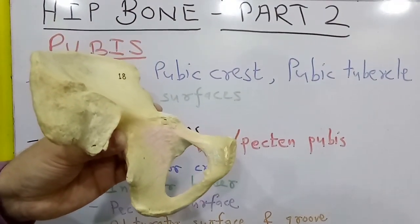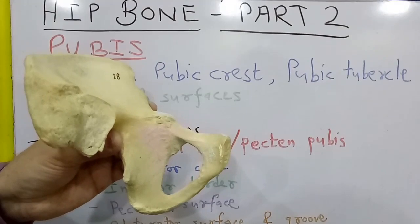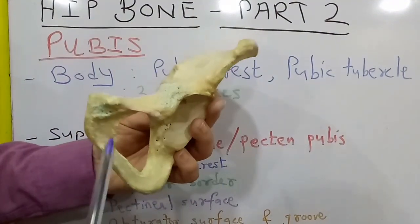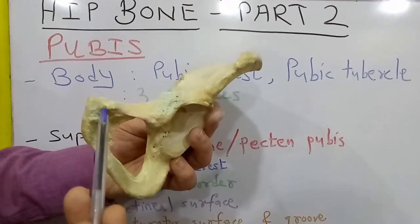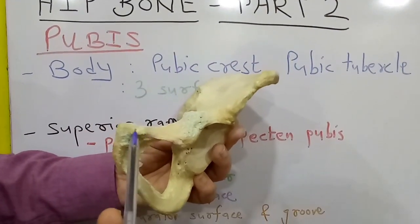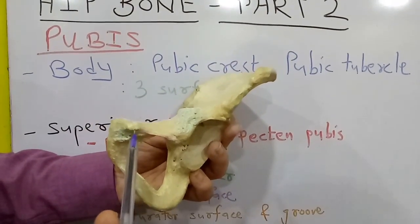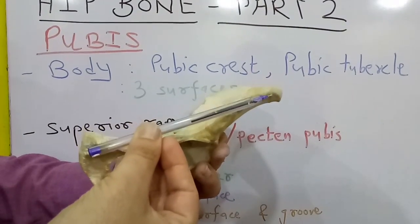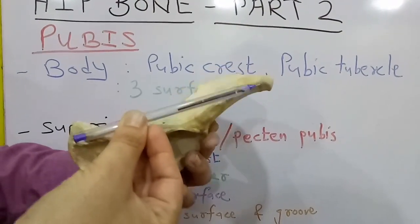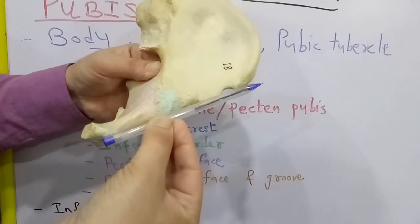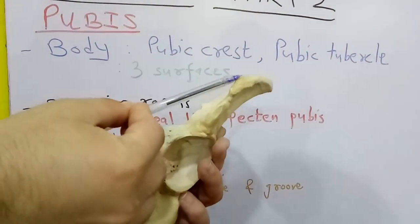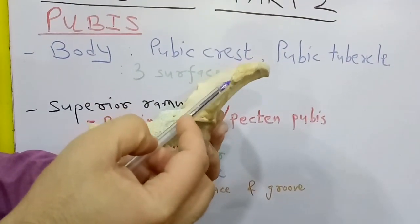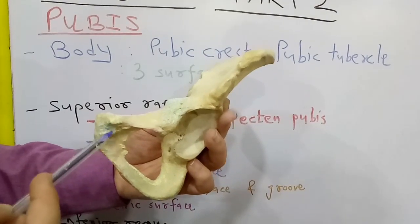So those are the general features of pubis. Now coming to attachments: the pubic tubercle gives attachment to the medial end of the inguinal ligament, which is attached between the anterior superior iliac spine and the pubic tubercle, as seen in the previous video.